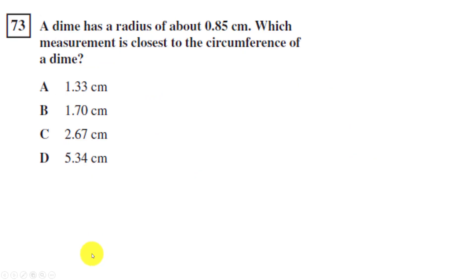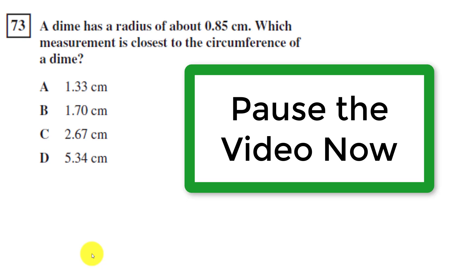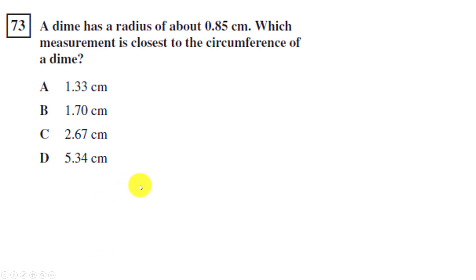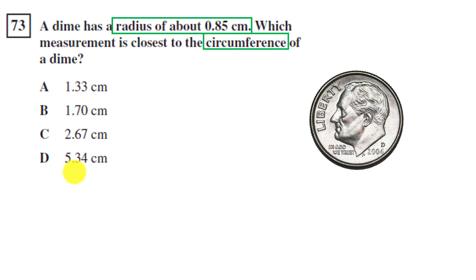I have one last question for you. Read the question carefully. Highlight the important information and attempt to solve it before I give you the answer. Pause the video now. Okay, a dime has a radius of about 0.85 centimeters. Highlighted that. Which measurement is closest to the circumference of a dime? So now we're talking about circumference and it looks like we're going to have to do a calculation. I immediately start thinking, here's a dime. So I'm visualizing. What is the circumference actually meaning? It's the distance around that dime.